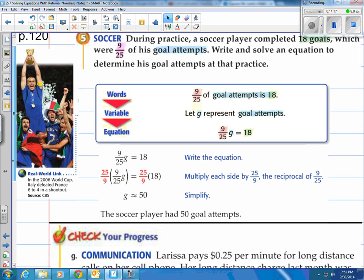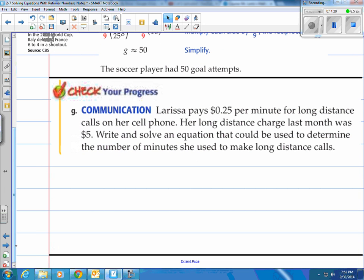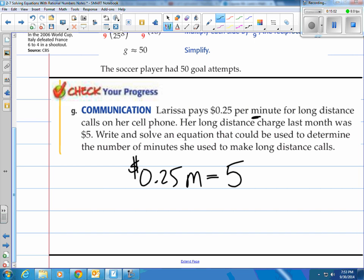Try this one. Larissa pays $0.25 per minute for long distance calls on her cell phone. Her long distance charge last month was $5. Write and solve an equation that could be used to determine the number of minutes she used to make long distance calls. Well, let's see here. She is calling and charged $0.25 per minute. So I would say for 1 minute it would be $0.25. If I put 2 in for M, I'm going to use M for a minute. Then it would be $0.50. If she had 3 minutes, 3 times 0.25 would be $0.75. And she spent, it looks like $5. Now they go out two decimal spots here. So I'm going to put in two decimal spots. So it's $5 right there. There it is. There's the equation they're looking for.